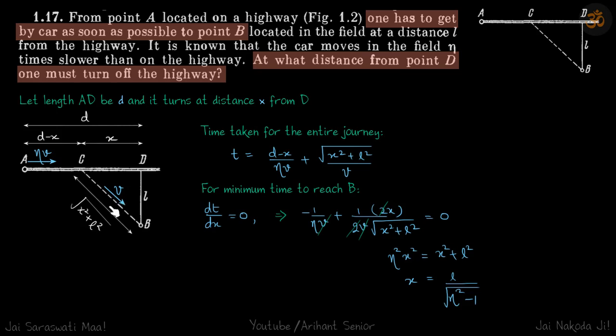Let's find the time taken for him to reach point B. It's the time taken on path AC plus time taken on path CB. So on AC it is D minus x by eta V, distance upon velocity. And for this path, again distance upon velocity, so root of x squared plus L squared by V.